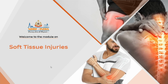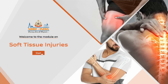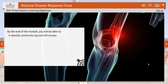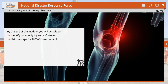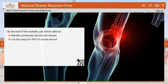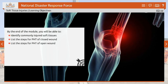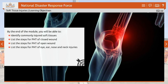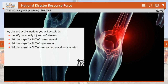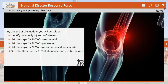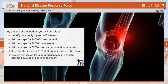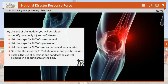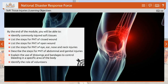Welcome to the module on soft tissue injuries. By the end of this module, you will be able to identify commonly injured soft tissues, list the steps for pre-hospital treatment (PHT) of closed wounds, list the steps for PHT of open wounds, list the steps for PHT of eye, ear, nose and neck injuries, describe the steps for PHT of abdominal and genital injuries, explain the use of dressings and bandages to control bleeding in a specific area of the body, and identify the role of volunteers.